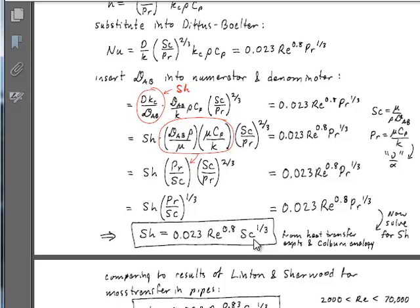This is really giving you a device for going through and using these analogies between Sherwood numbers, Nusselt numbers, Schmidt numbers, and Prandtl numbers. That's basically this dimensionless form of these analogies between heat and mass transfer, all wrapped up in this Dittus and Boelter correlation. Let's see how well this actually works.